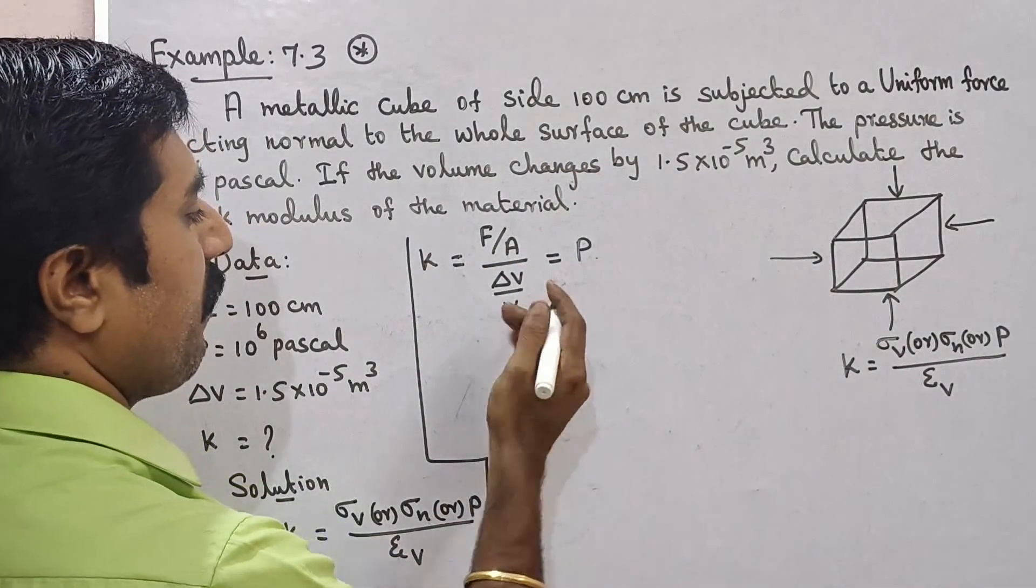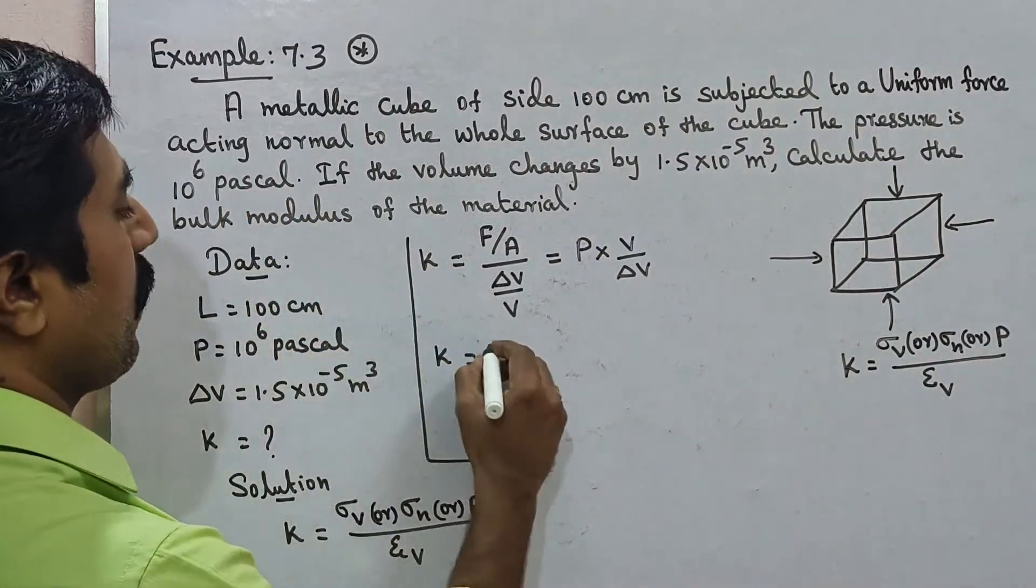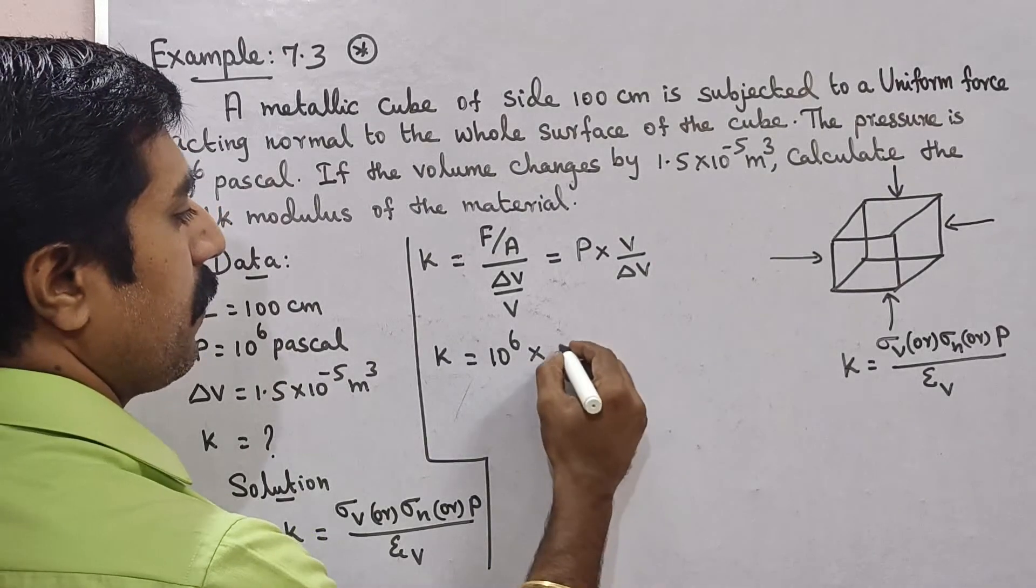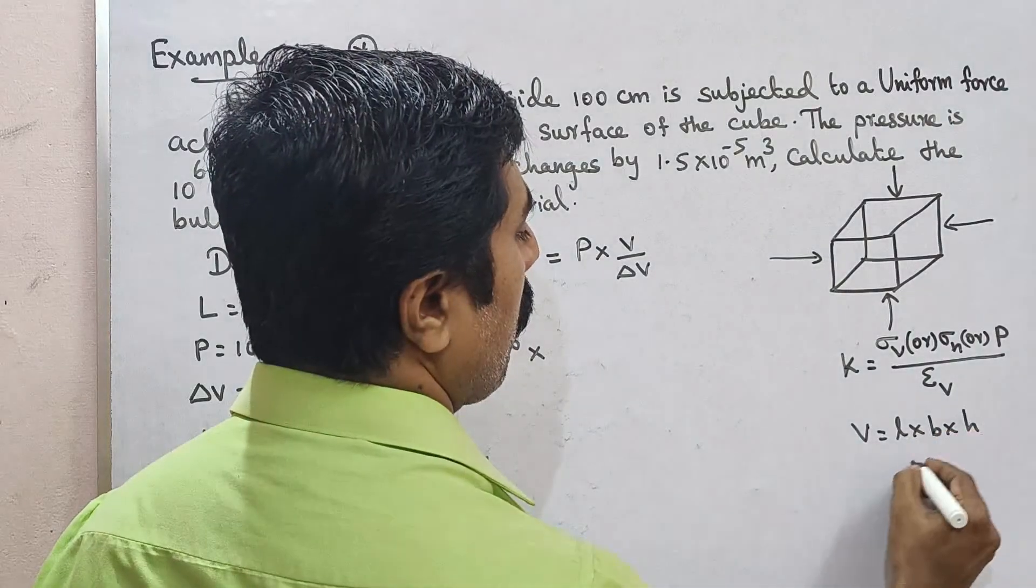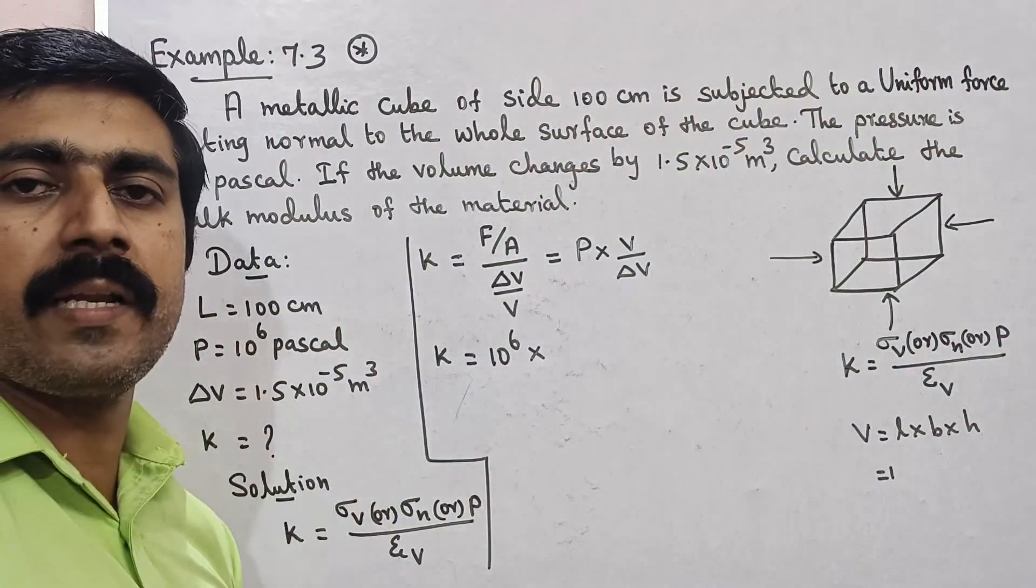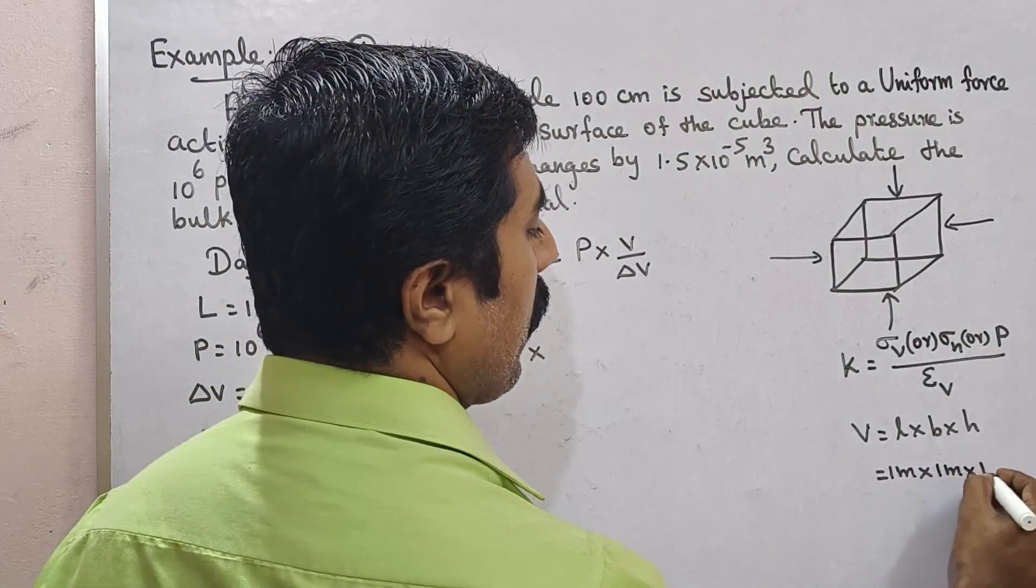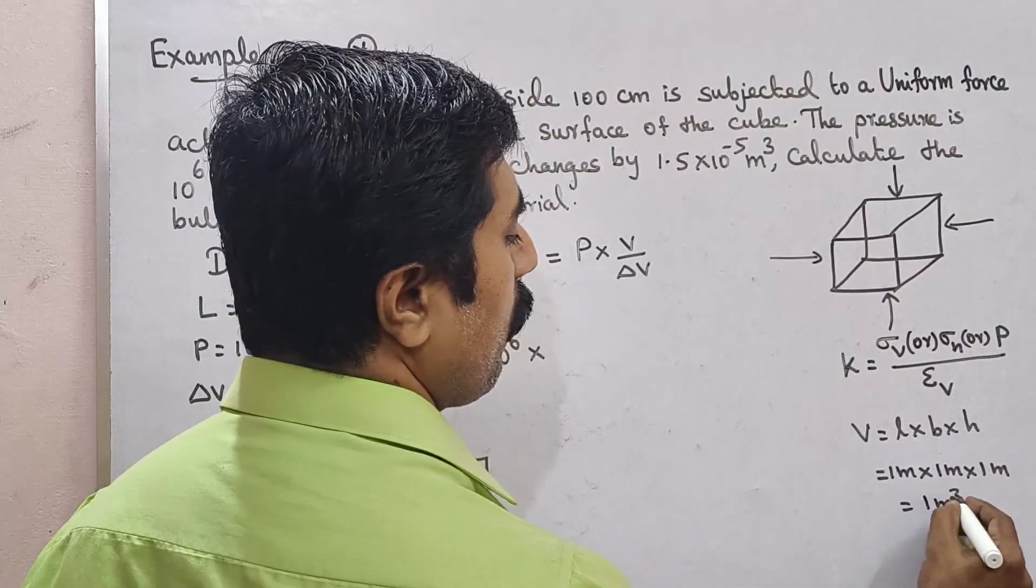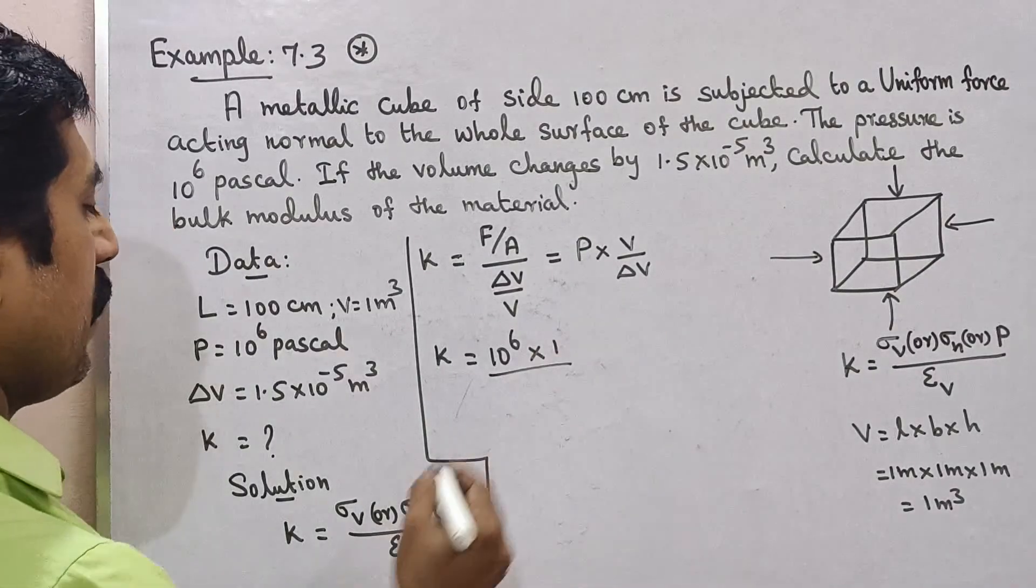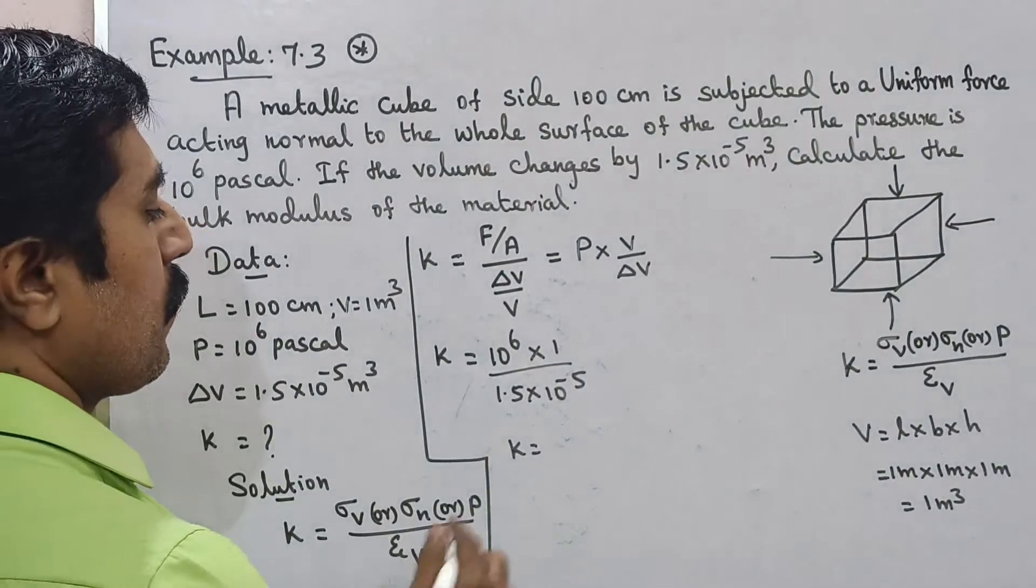Delta V, delta V, 10 power 6. Volume cube, length breadth height. Length breadth height. Volume is equal to length breadth height. K is equal to 1 meter cube, but here you are value 1 divided by change in volume 1.5 into 10 power minus 5. So K is equal to 1 by 1.5, so divide.